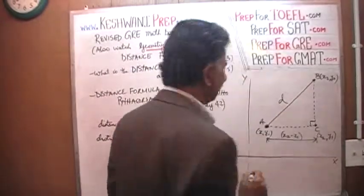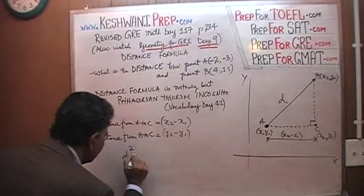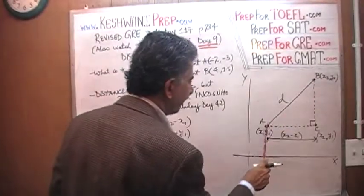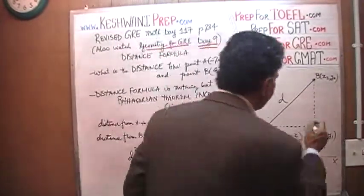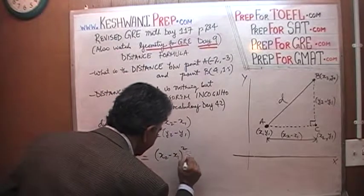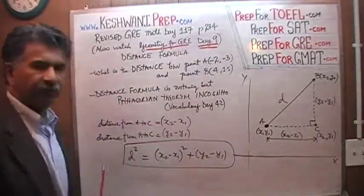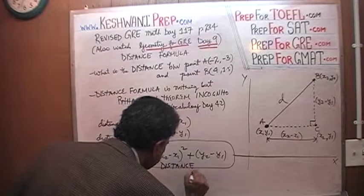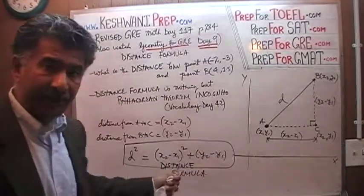This is the distance we are interested in calculating — let's call it D, the distance from A to B. Applying the Pythagorean theorem: the square of the hypotenuse, which is D, equals the square of x2 minus x1, plus the square of y2 minus y1. That's it — that is the distance formula.